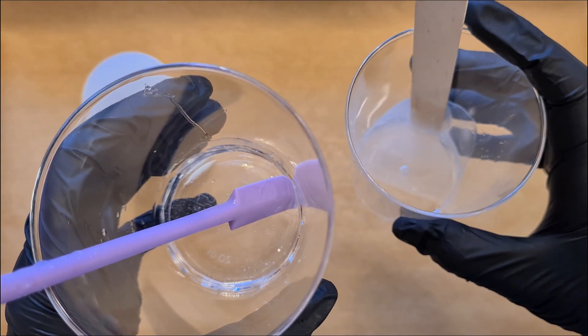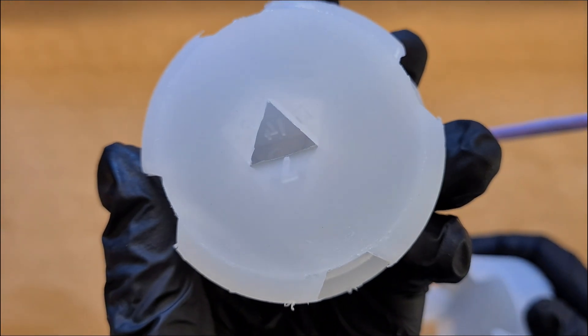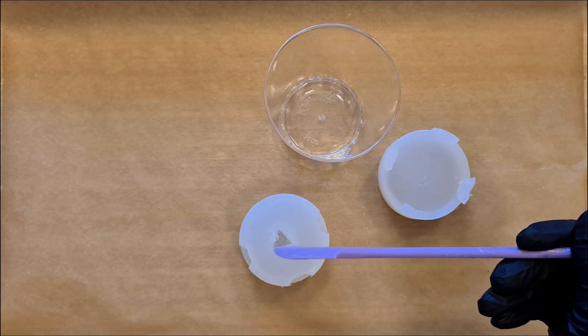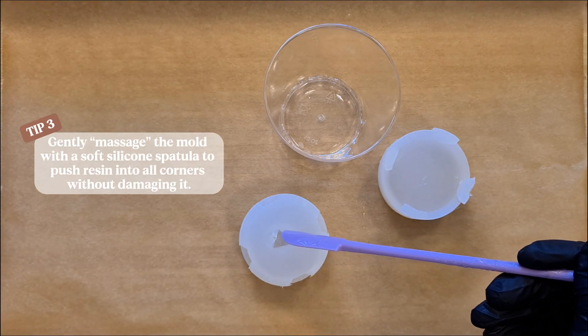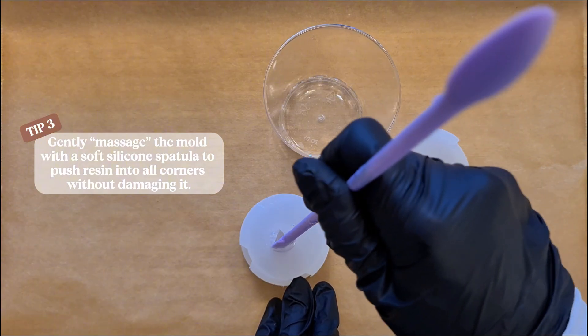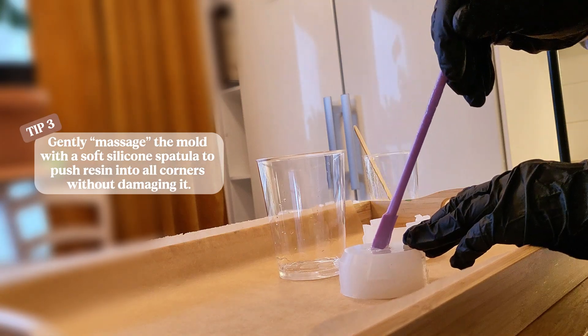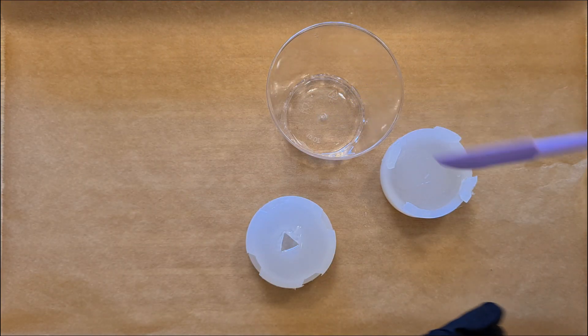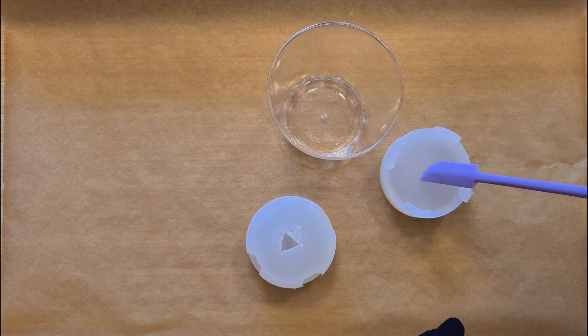And before I pour this into the actual dice mold, I will take my soft spatula, cover it with resin, and then just gently massage that into all of the dice mold's corners. This will help fill out all of those holes with resin and also not damage the mold.